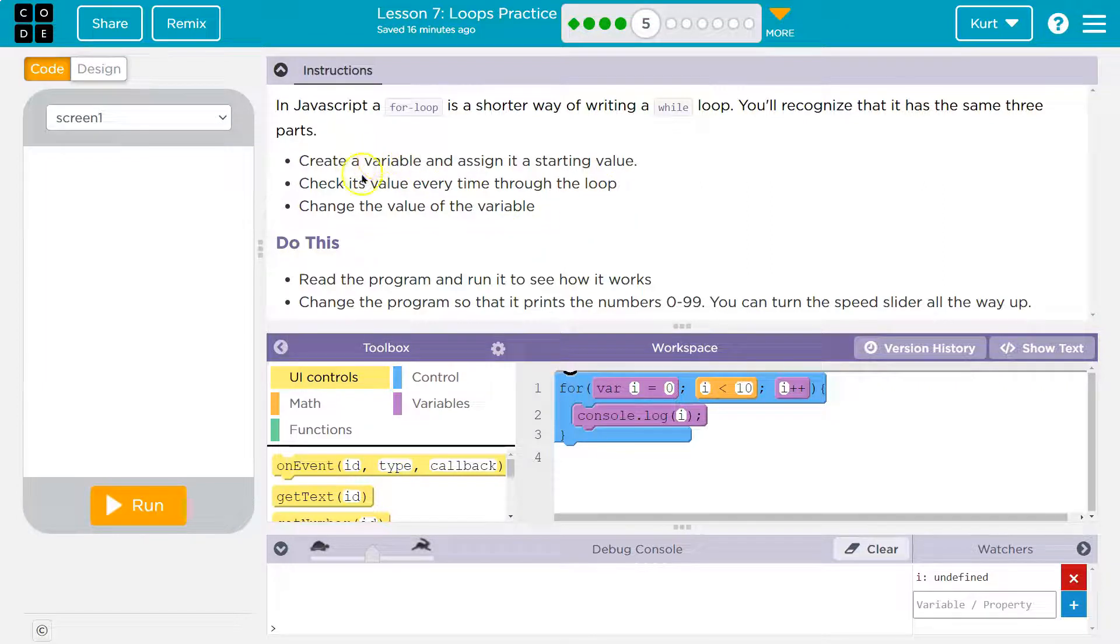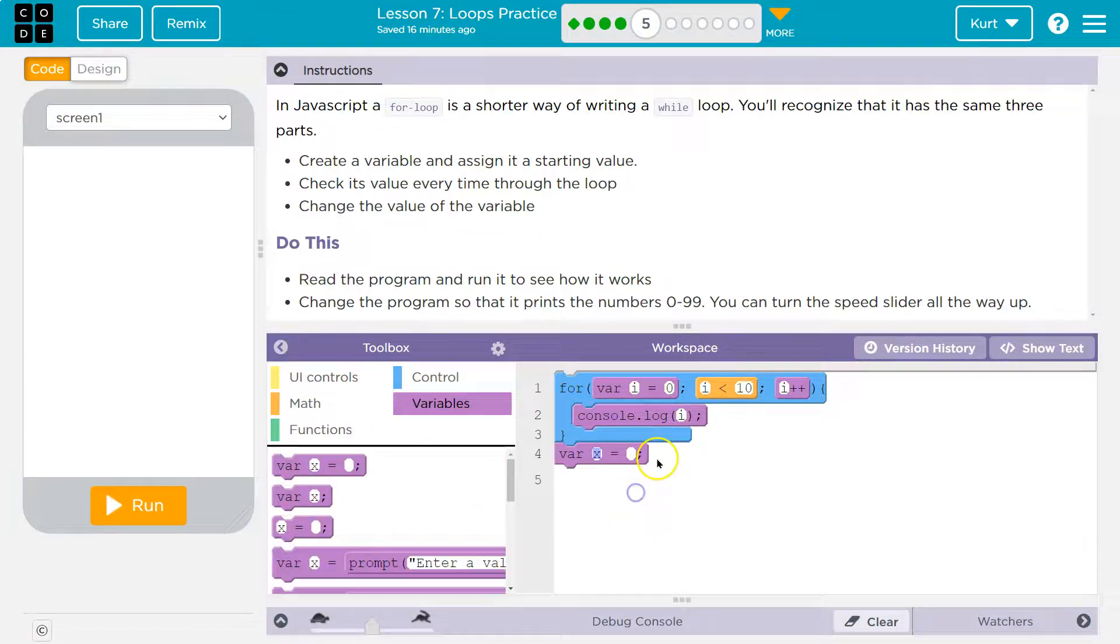Let's start here. Create a variable and assign it a starting value. I'm going to hide this for a sec. My variable is going to be creatively called num (N-U-M), and I'm going to start it at zero.